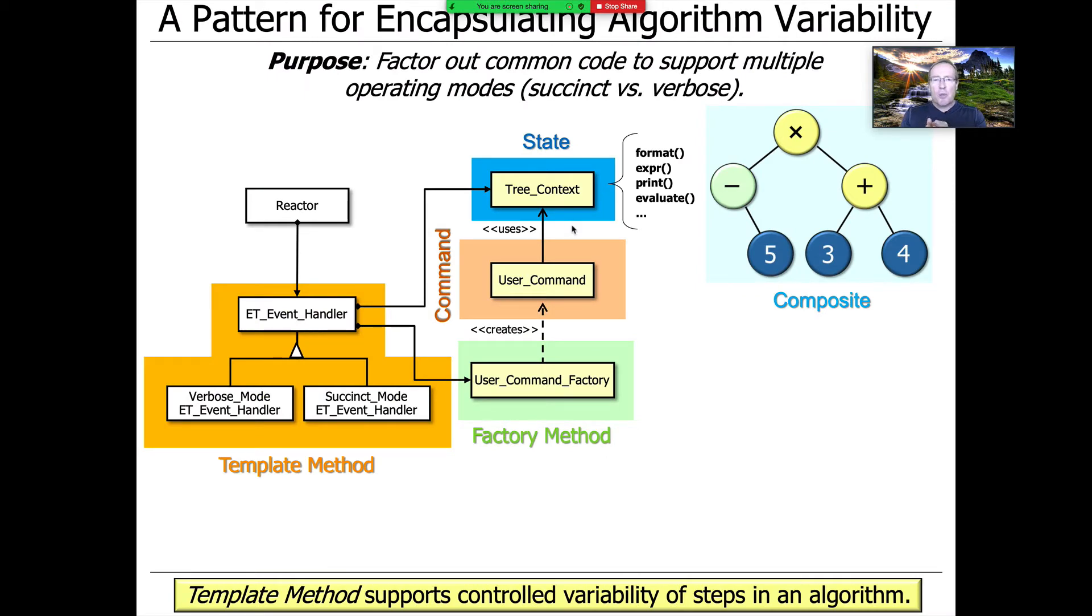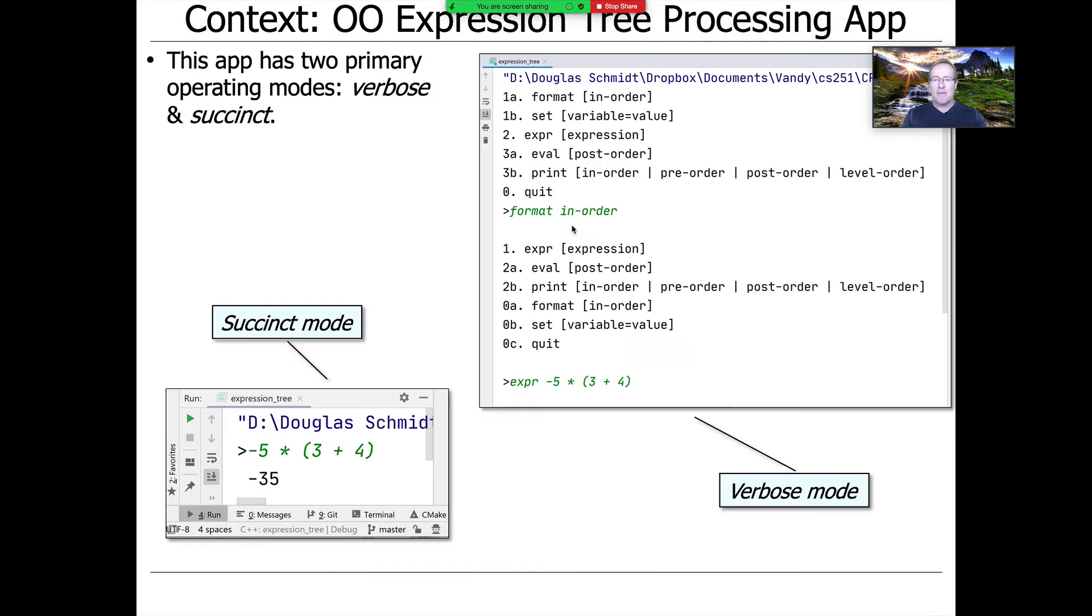The purpose of this example is to demonstrate how to factor out common code to support multiple operating modes, succinct mode and verbose mode. Template method will allow controlled variability for the steps in an algorithm. The expression tree app has two primary operating modes.